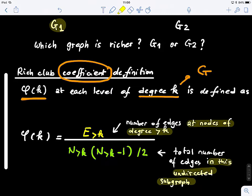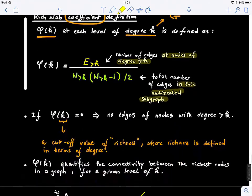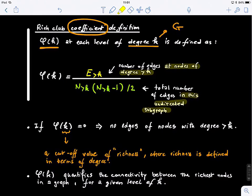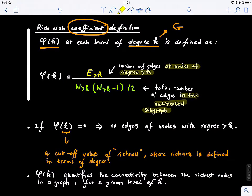And then you want to quantify or you want to compute the richness, the rich club coefficient of this subgraph. Then you look at the number of edges at nodes of degree greater than k. So you count the number of edges that are connected to nodes with high degrees, higher than k, and you divide them by the total number of edges in this subgraph. You guys can try to solve it by hand and see how it works out on a small graph.